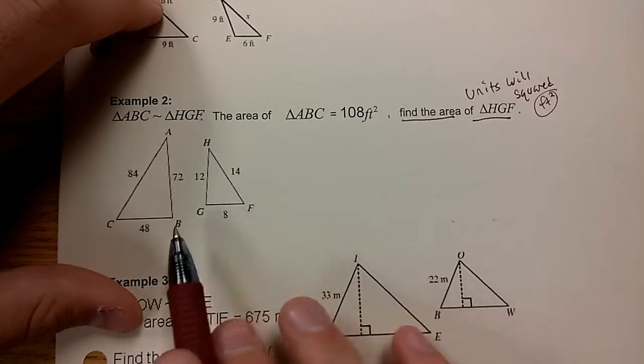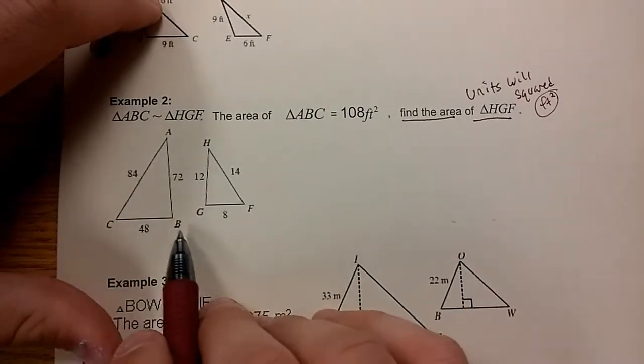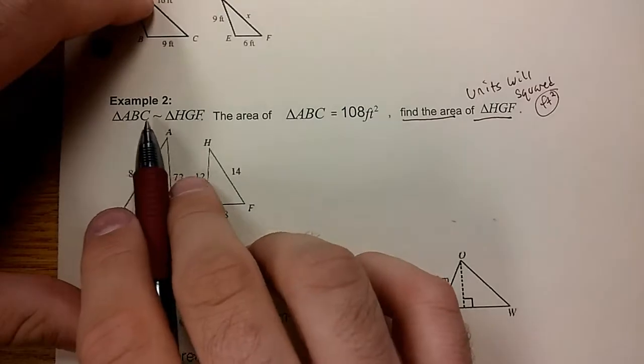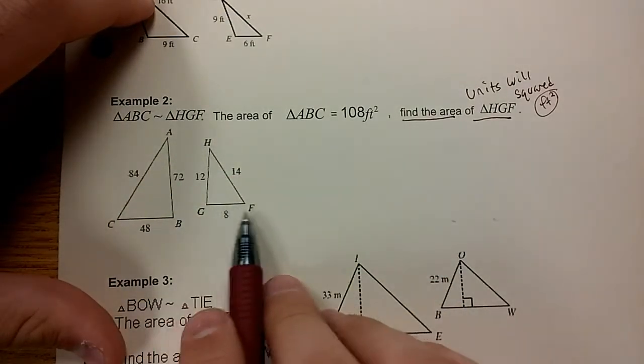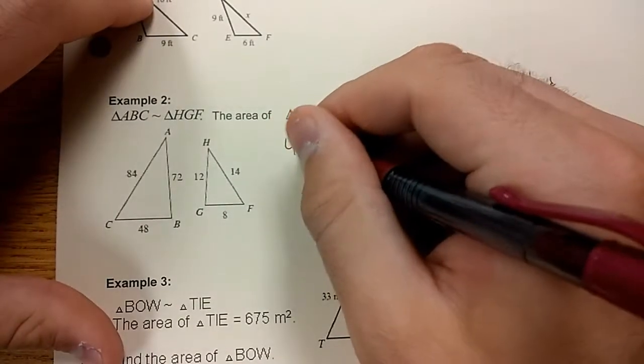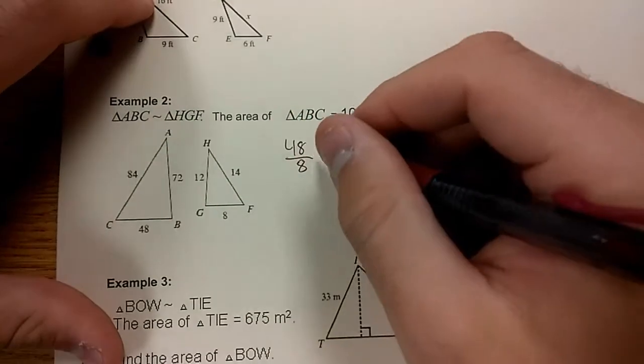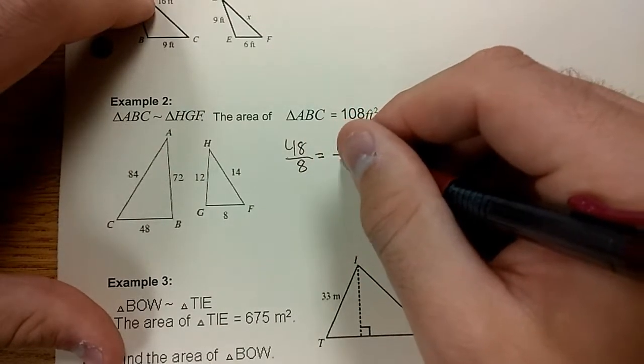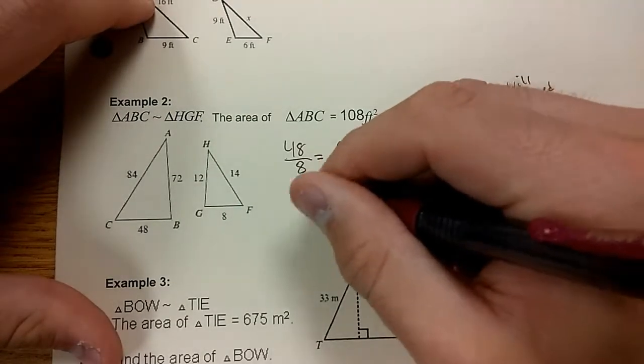You can pick any two numbers for a pair that you want. For example, if you want to use 48, BC, second two letters, BC, second two letters, GF. GF is 8. So 48 over 8 is your side length ratio, or if you simplify that, it's going to be 6 over 1. Divide both of them by 8. This is your side length ratio.